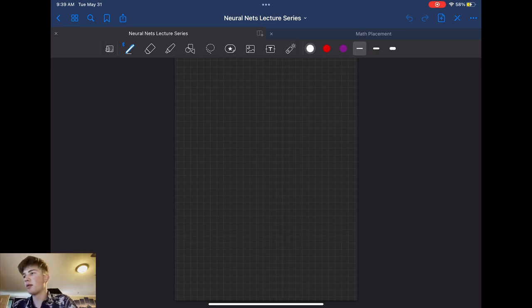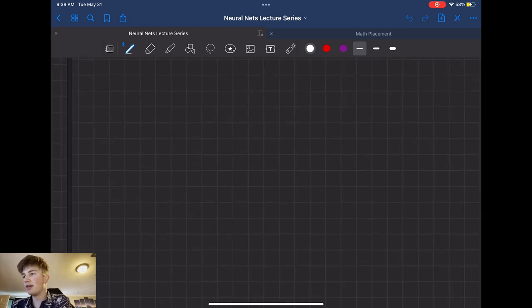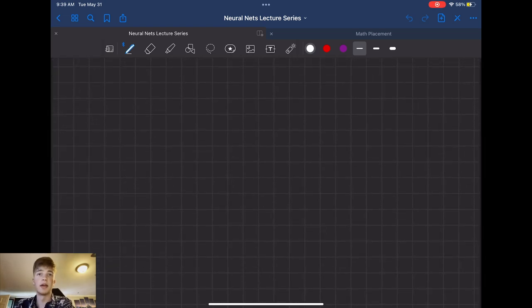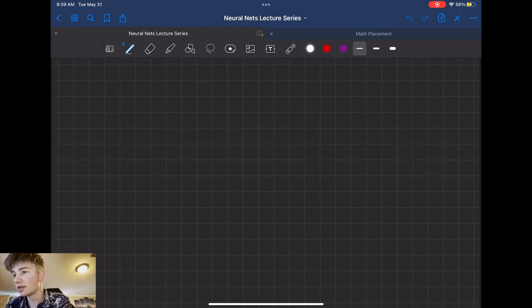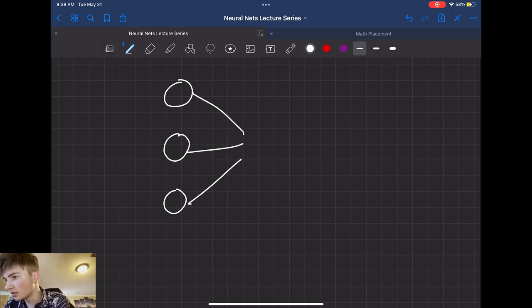So let's imagine for a moment that we have a vector of our first layer of neurons. Remember, a neuron just holds a number. It is a number. And so a layer is just a vector of numbers.